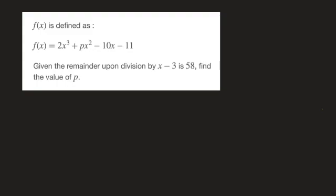Now, the key bit of information we need to pick up on here is the fact that we're told that the remainder, when we divide f(x) by x minus 3, is equal to 58. And what makes that important is the fact that the remainder theorem,